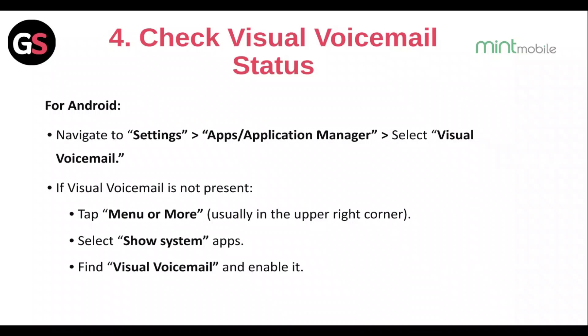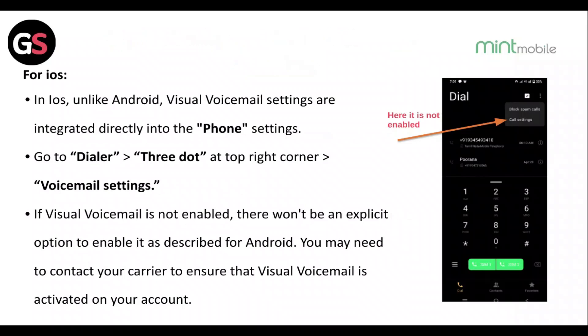Find Visual Voicemail and enable it. For iOS, unlike Android, Visual Voicemail settings are integrated directly into the phone settings. Go to the Dialer, then tap on the three dots at the top right corner and select Voicemail Settings. If Visual Voicemail is not enabled, there won't be an app option to enable it as described for Android. You may need to contact your carrier to ensure that Visual Voicemail is activated on your account.